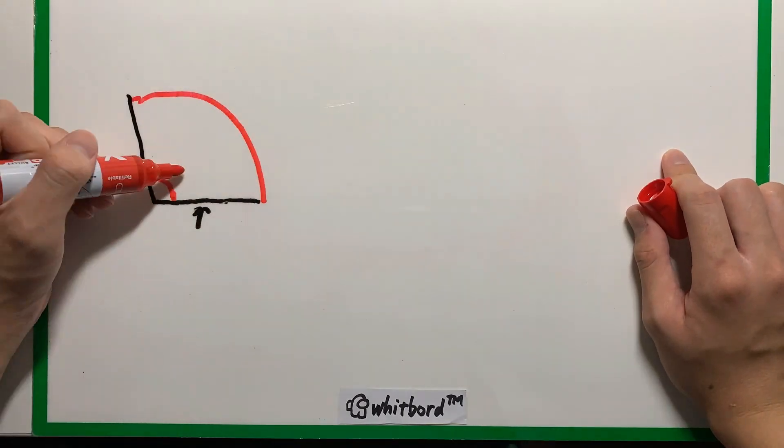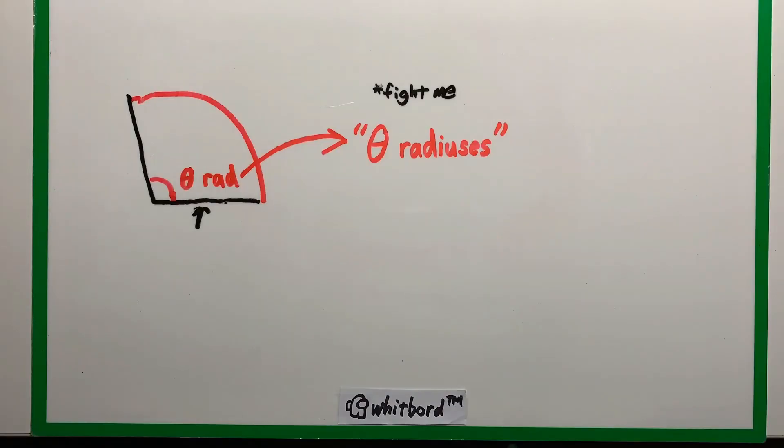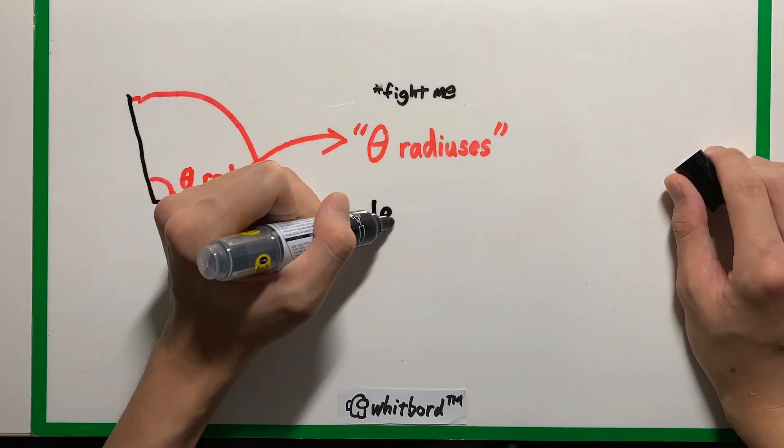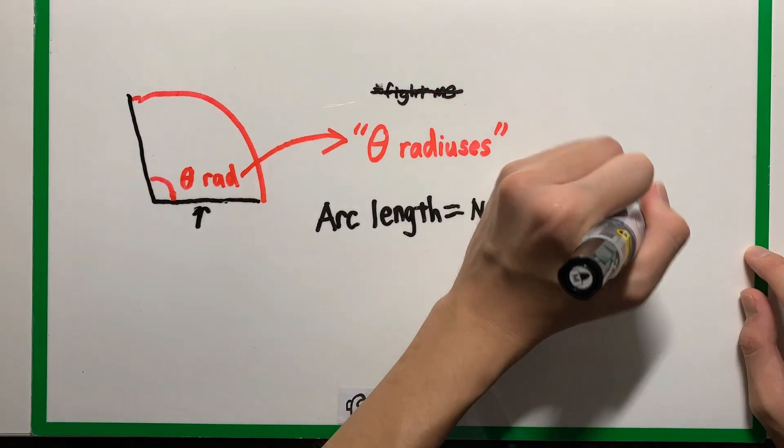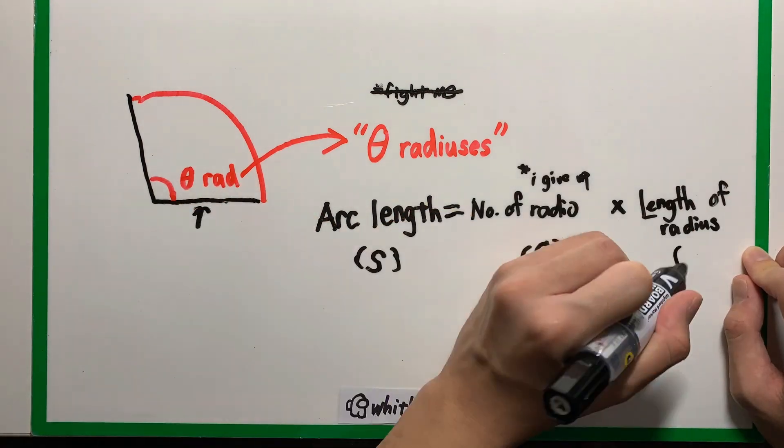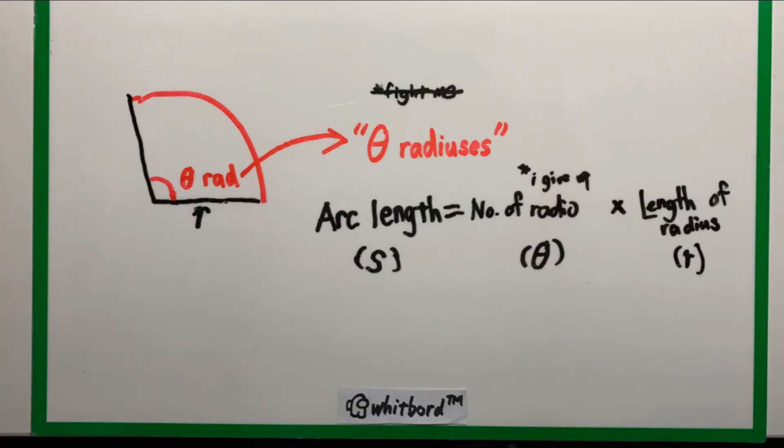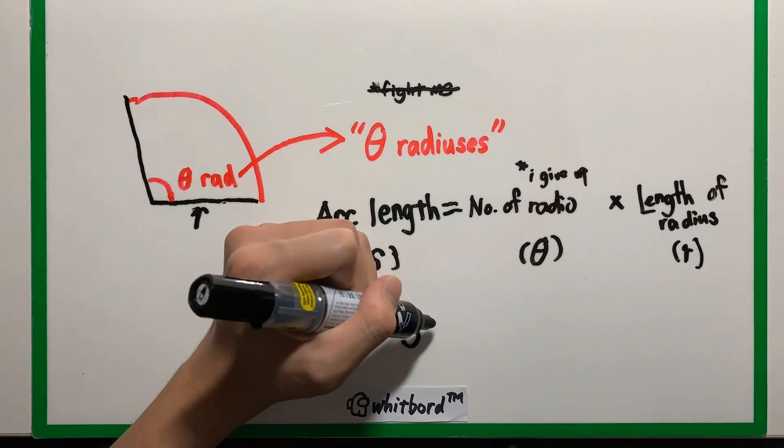Recall that the radian just means number of radiuses. So suppose you have theta radians. That means your arc will span the length of theta radii. And given that each radius has length r, the arc length will be this.